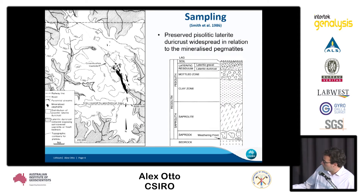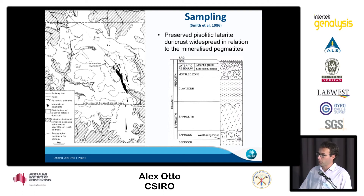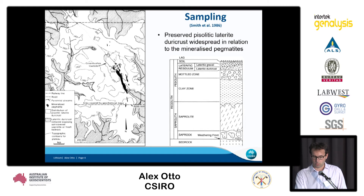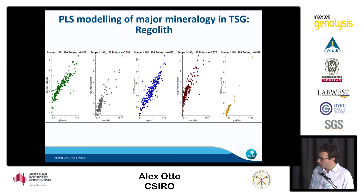More specifically, they sampled the lateritic duricrust and the pisolith material. That dataset was recently reanalyzed geochemically and also with the handheld FDR instrument.